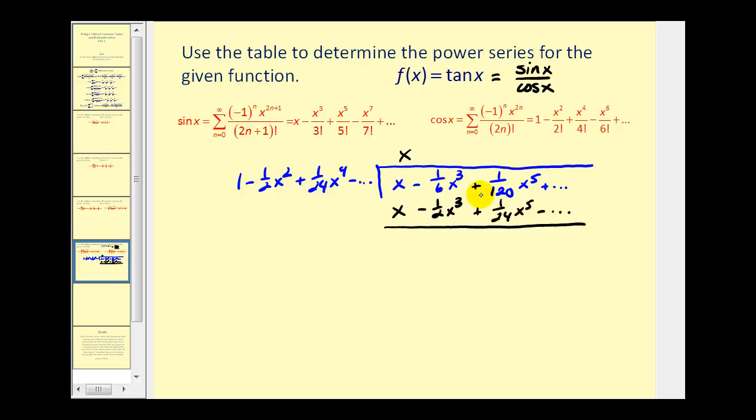Remember when we perform long division we have to subtract this quantity here. And instead of subtracting we usually add the opposite. So we can change this to addition as long as we change all of the signs here. So we'll have negative one sixth x cubed plus one half x cubed. And that's going to give us one third x cubed.